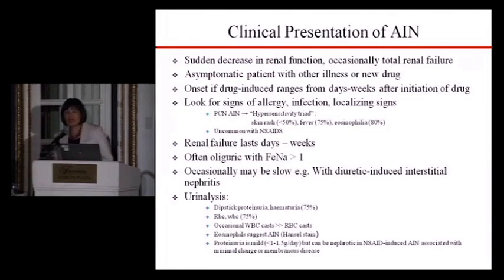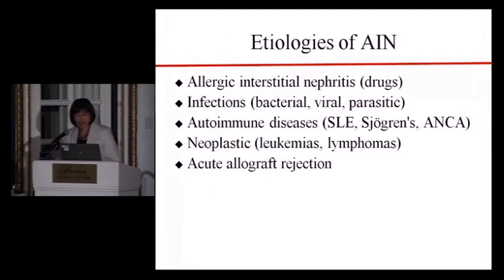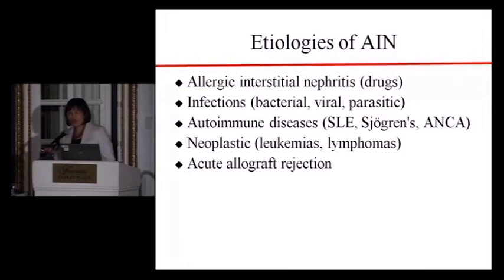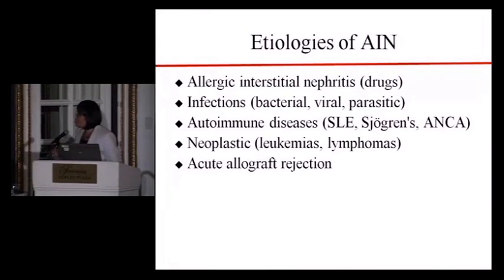On urinalysis, you will commonly find hematuria and pyuria. The most common cause of AIN is drugs, as mentioned. However, infection by bacteria, viral, or parasite, autoimmune disease, neoplasm, or acute allograft rejection can also cause AIN.